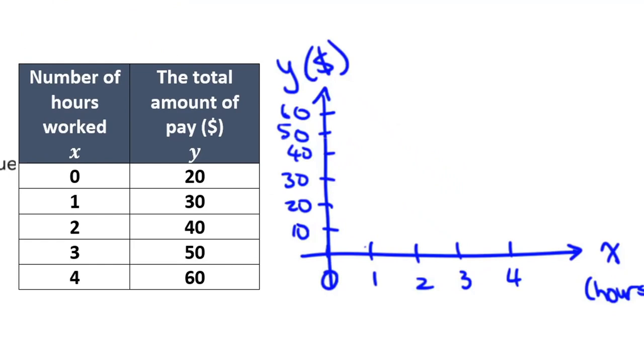Now let's put in the points. When X is 0, Y is 20. So when X is 0, Y is at 20. I get this point right there. When X is 1, Y is 30. So X 1, Y 30. That brings me up to here. When X is 2, Y is 40. Do the same thing. I get a point right there. When X is 3, Y is 50. And then finally, when X is 4, Y is 60.